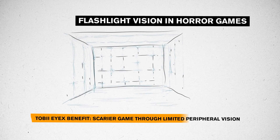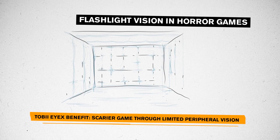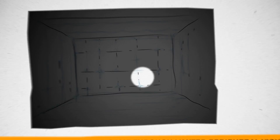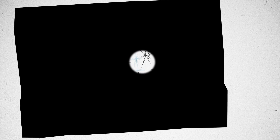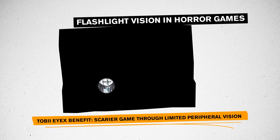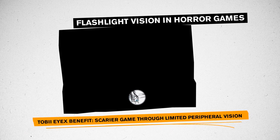Flashlight Vision in Horror Games: You're in a dark padded cell. You can only see through the view of your flashlight, which is linked to your point of gaze. As you move your eyes, you discover your cellmates — the creepy kid standing right in front of you, the bugs crawling on the blood-splattered walls. What else is hiding in there? If you dare to look, you will see.